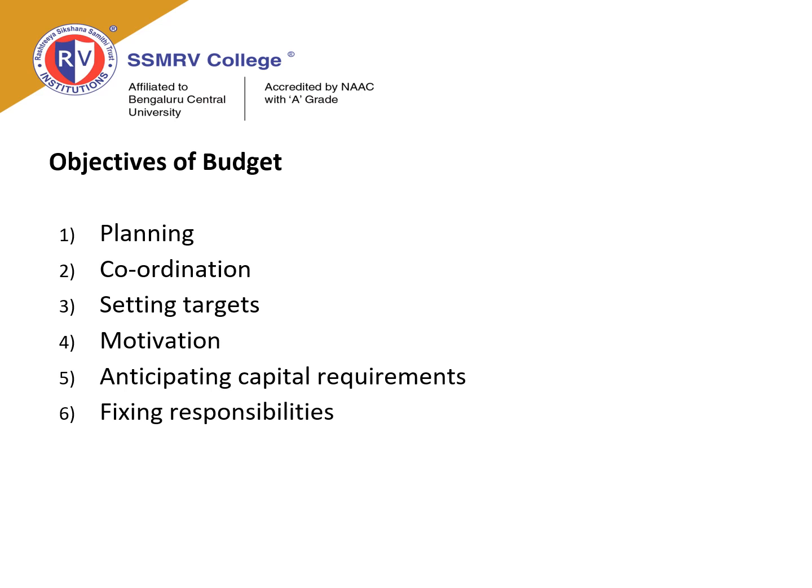The fourth objective is motivation. When standards and estimations are set, they serve as motivation for each department to achieve the given target. The fifth objective is anticipating capital requirements — after preparing budgets, we identify the number of workers required, the amount to be spent on labor and materials, and other expenses to be incurred. The last objective is fixing responsibilities — after making a budget, each department is made responsible for the target they have to achieve.